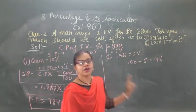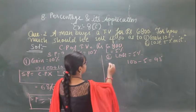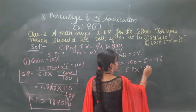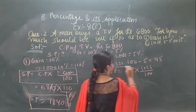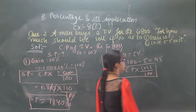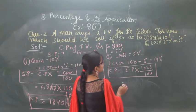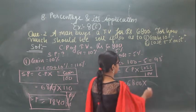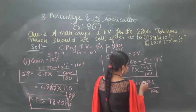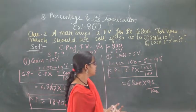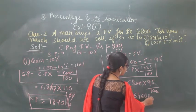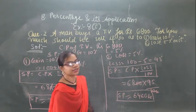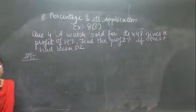Now we will calculate for loss of 5%. That is 95. Selling price is equal to cost price into loss upon 100. The condition is that loss and cost price are given. So cost price is 6800 into 95 upon 100. The selling price is rupees 6460 when you get 5% loss.